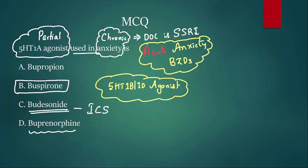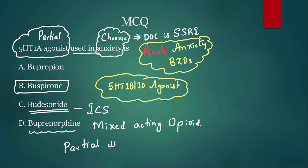Buprenorphine is a mixed-acting opioid. It is considered a partial mu agonist but a kappa antagonist. The most important question asked about buprenorphine is: it is used to treat opioid dependence. So if you want to treat opioid dependence, we use methadone or buprenorphine. So the answer to MCQ 1 is buspirone.